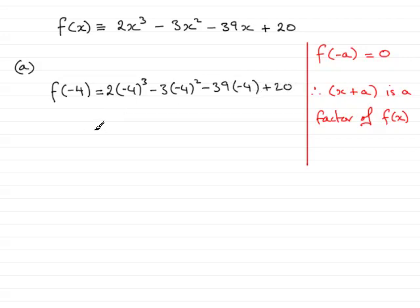If we work this out, (-4)³ times 2 comes to -128, (-4)² times -3, that's -48, -39 times -4, that's plus 156, and then we've got the plus 20 on the end.